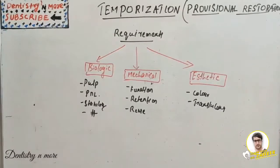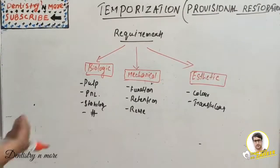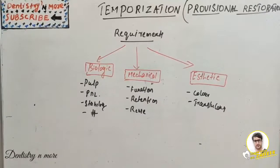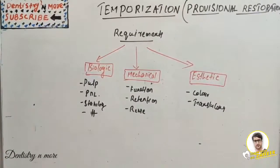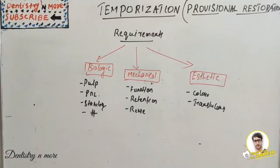We give temporization for these main reasons: if it is an anterior tooth, we need a provisional restoration mainly for aesthetic purposes. For a posterior tooth preparation, we need to protect the tooth until the permanent crown comes, because without it there are chances of fracture of the prepared abutment tooth or slight movement, disrupting the fixation process. The definition of temporization is a fixed or removable prosthesis designed to enhance aesthetics, stabilization, and function for a limited period, after which it is replaced by the definitive prosthesis.